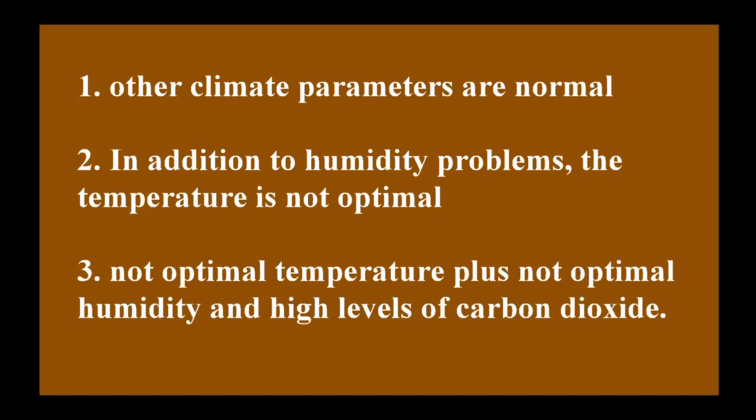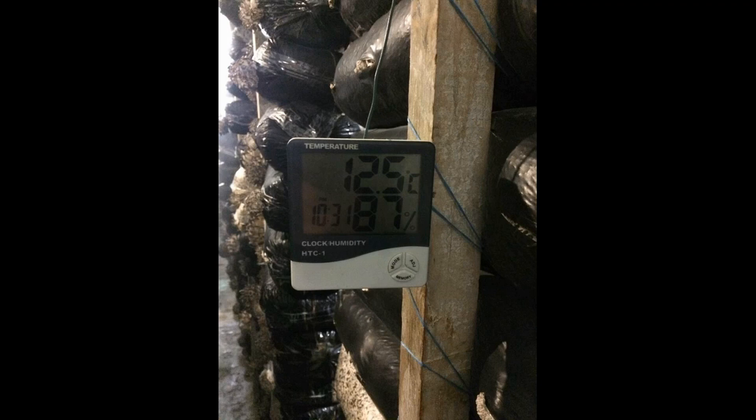However, temperature often turns out to be non-optimal as well, and in some cases a high level of carbon dioxide is added, leading to various mushroom deformities. Today we'll examine another scenario – humidity spikes or uneven moisture levels throughout the day. Often these spikes interfere with the proper formation of primordia, and instead you see formations that many growers refer to as monsters. Let's take a look.